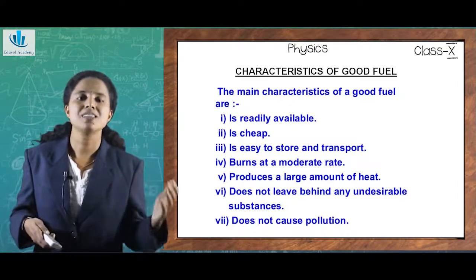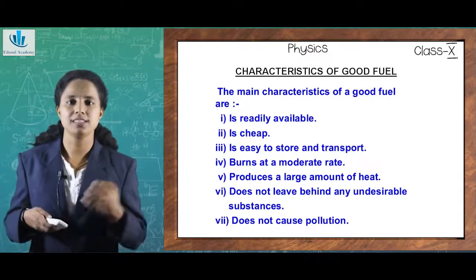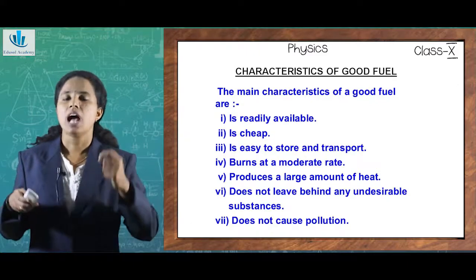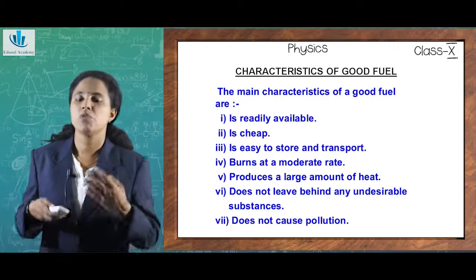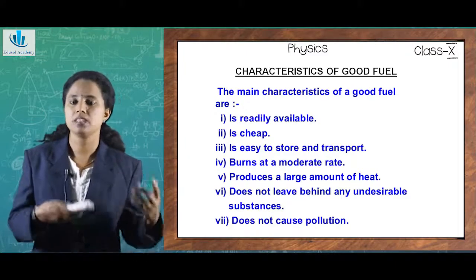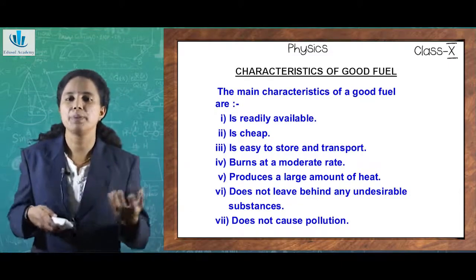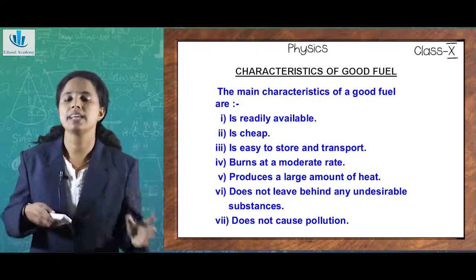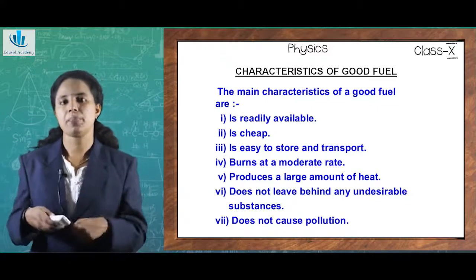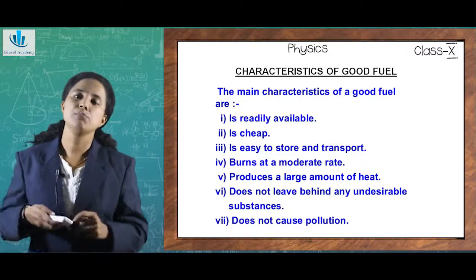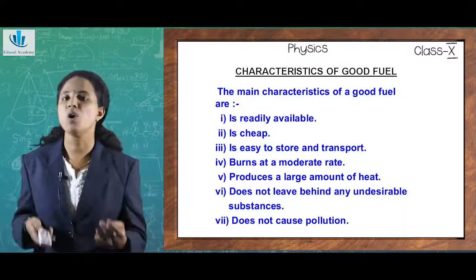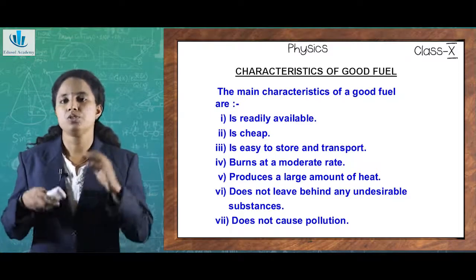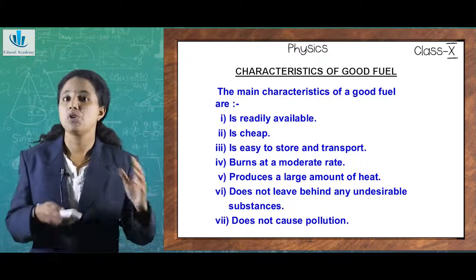A good fuel should produce a large amount of heat energy, which we use to run vehicles and machines. A good fuel must not leave any undesirable substances — for example, burning wood produces ash which can cause diseases like asthma. A good fuel should give only the desired product and must not cause any kinds of pollution, whether air, water, or land pollution. By comparing characteristics of good fuel and good energy, we can distinguish good sources of energy from poor ones.